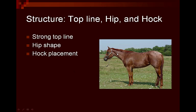Another area we talk about a lot in our reasons is looking at the horse's top line. We want a horse with a very long, strong top line — making sure there's not much of a dip in the back, and that everything blends very nicely and smoothly together. The shape of the hip with a nice turn to the croup, and how the hock comes down and stands down underneath the horse's body, are also important.